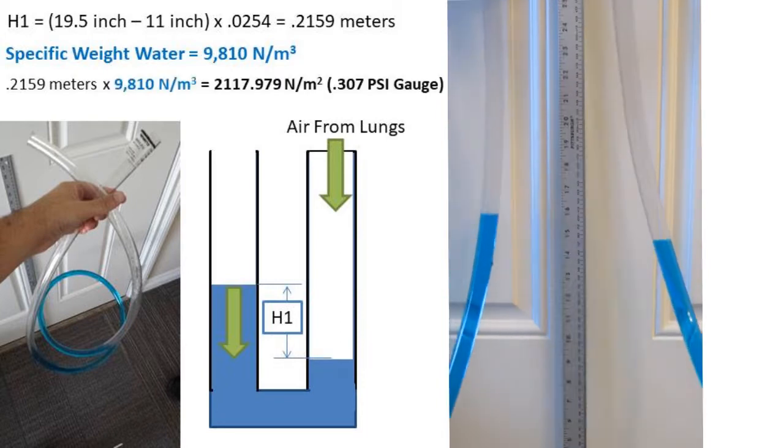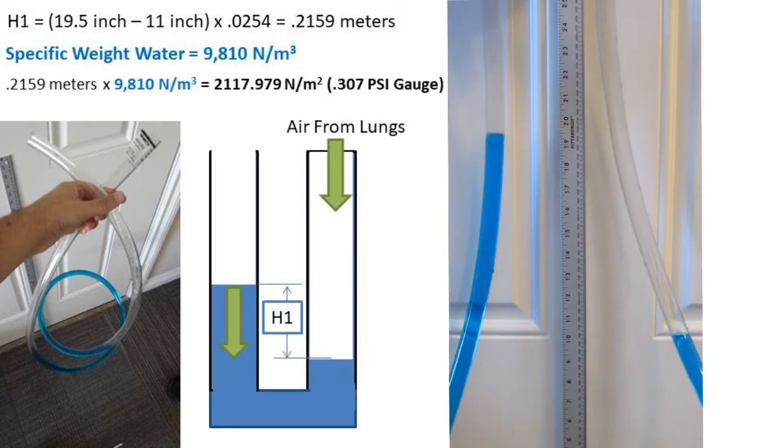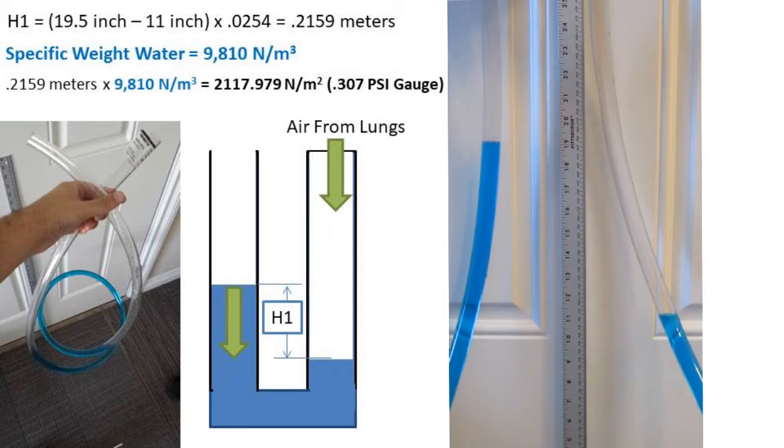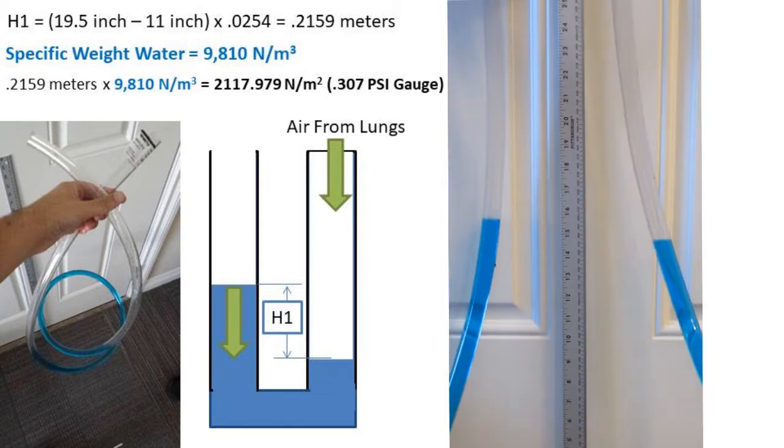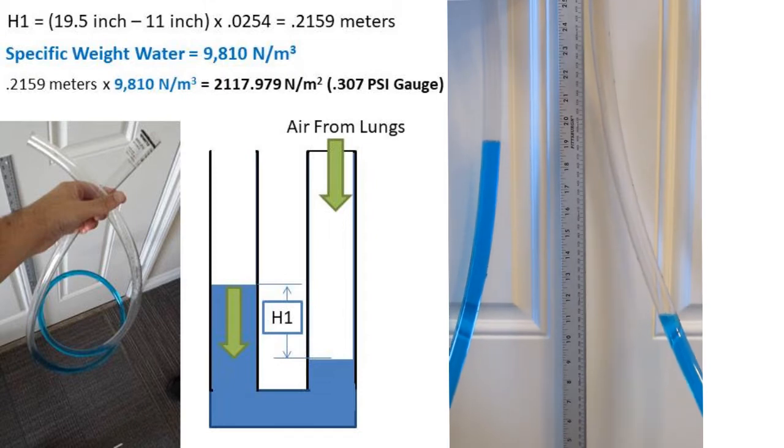We can multiply this value by the specific weight of water to get the pressure that I blew at. We get an answer of 2118 newtons per square meter. This is gauge pressure. If you're like me and think in imperial, this is 0.307 psi.